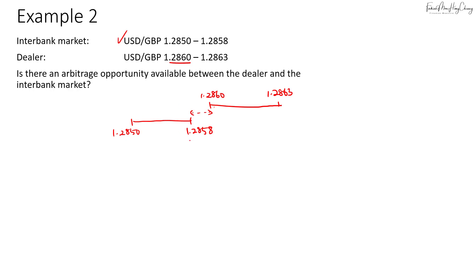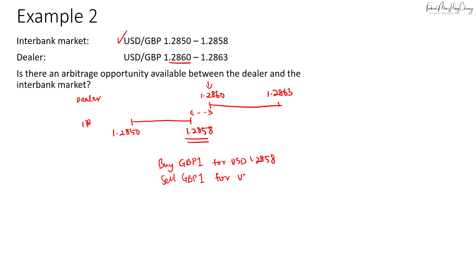Again the idea is to buy low and sell high. We'll buy one pound at 1.2858 in the interbank market — that's how much we have to pay — and then we will sell the one pound to the dealer for USD 1.2860. When we buy or sell, it's always referring to the base currency. So your arbitrage profit here will be 0.0002 for every one pound.